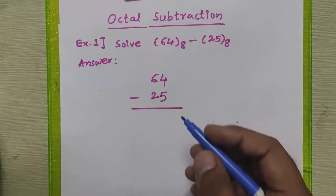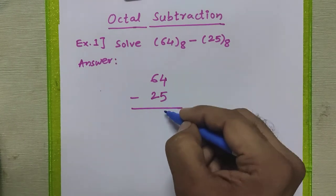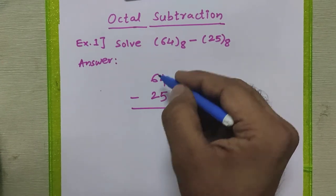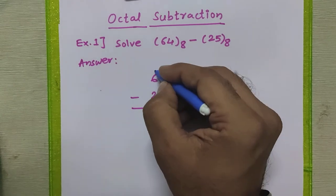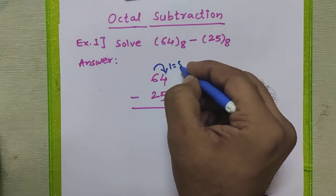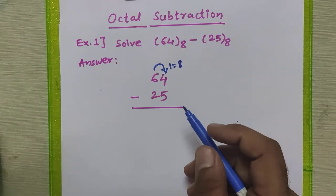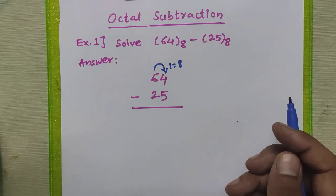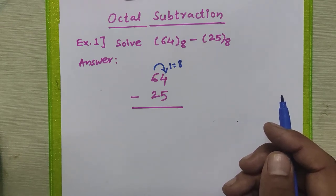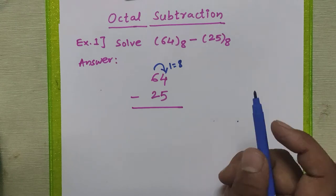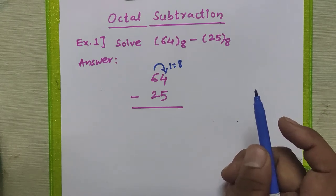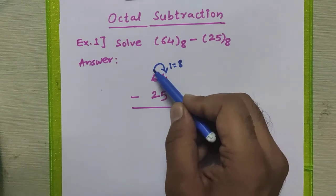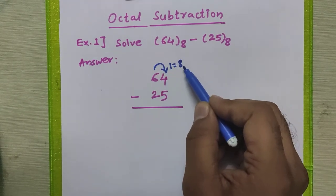Now 4 minus 5 is not possible, so we have to take one borrow from the next digit. Whenever we take a borrow in the octal number system, it is equivalent to 8 — because in the decimal number system one borrow equals 10, since the base is 10. Here the base is 8, so one borrow equals 8.